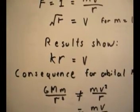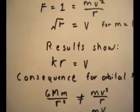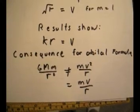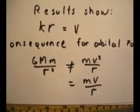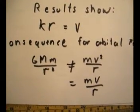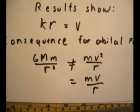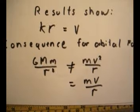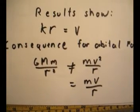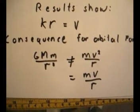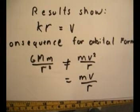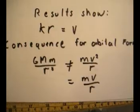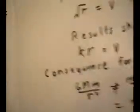So k being some constant times r is equal to velocity. And the strange consequence for the orbital formula is that we normally assume that gravity, which is G times the product of the masses over r squared, is equal to the centripetal formula, which is mv squared over r. But the experiment basically shows that the centripetal formula for non-contact forces is closer to just mv over r, a linear formula. So we'll take a look at the data that was collected.